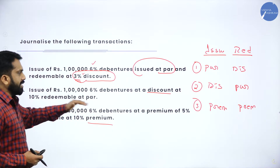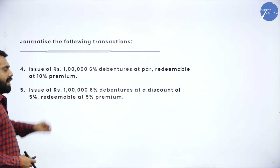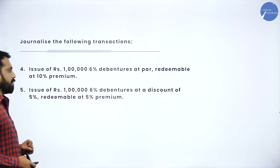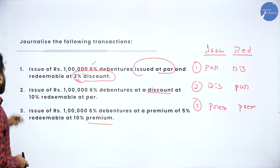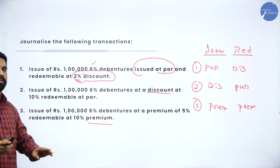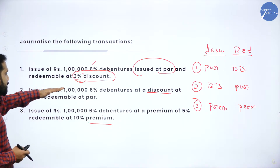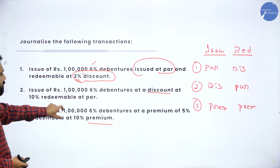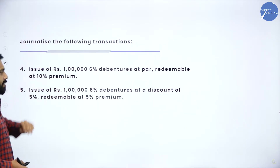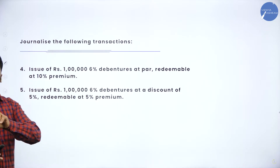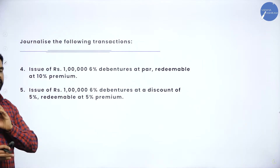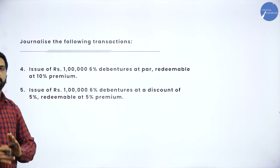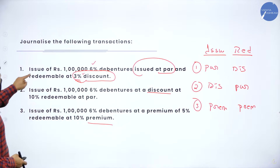All calculations are easy. We will go for these three first, then four and five. Remember, whatever points are given, they are not interlinked — each is separate. For everything, you will get two marks each, and another two marks for presentation. Total twelve marks will be awarded. Individual questions are separate. Now we will go for the first one: par and discount. Discount is three percent, value is one lakh.